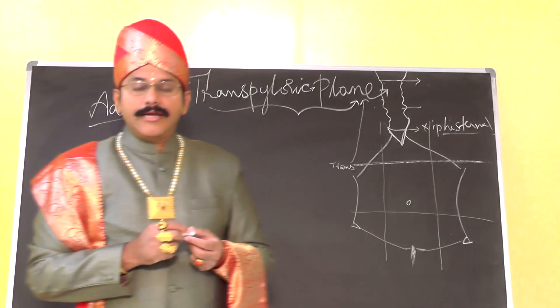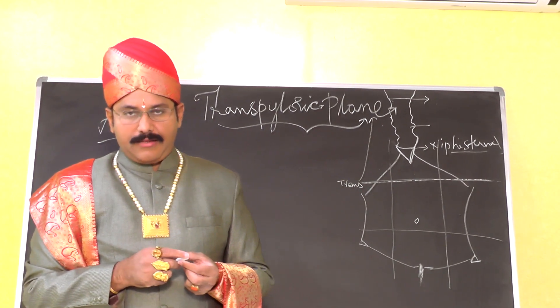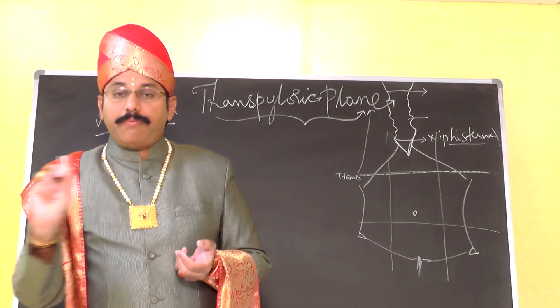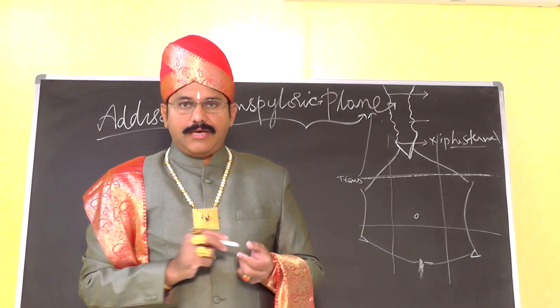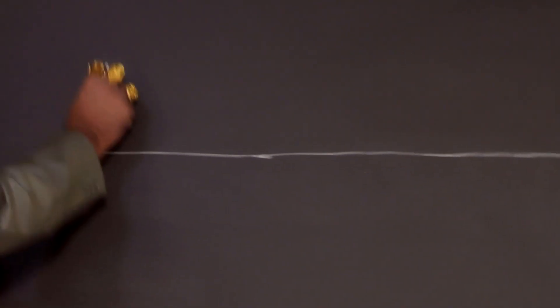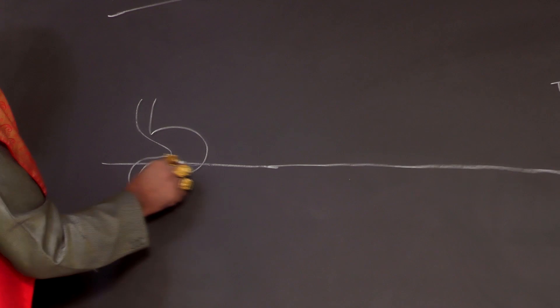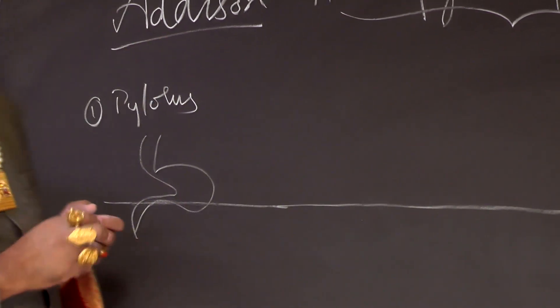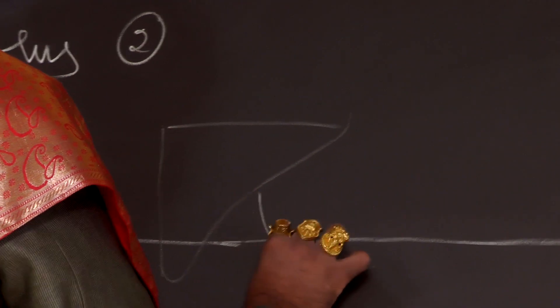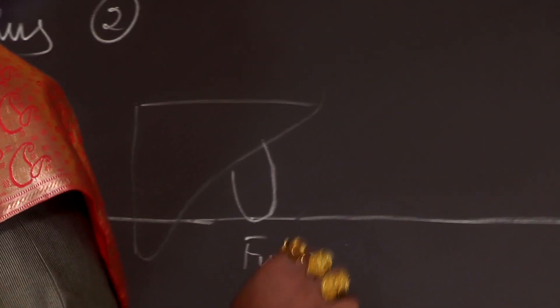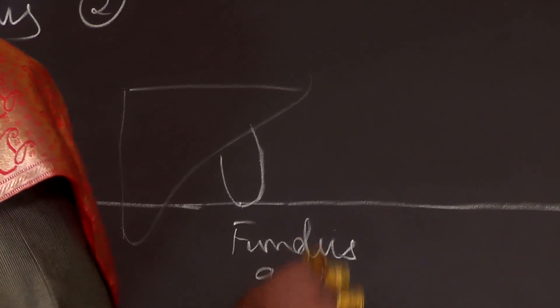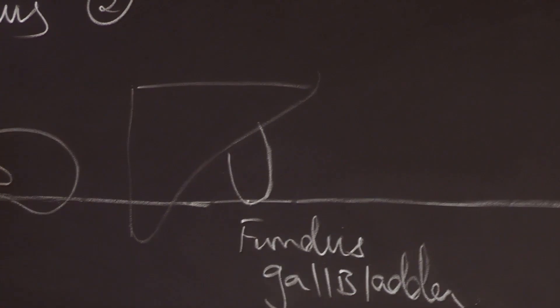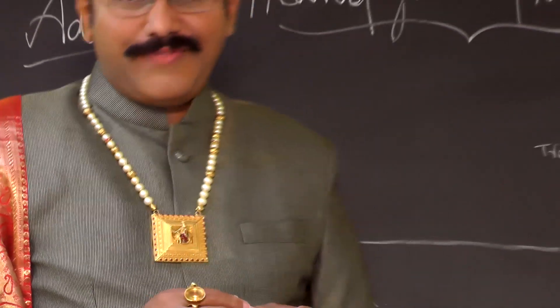The importance of Edison's plane is that this imaginary horizontal line passes through the pylorus of the stomach — hence it is called the transpyloric plane. It also passes through the fundus of the gallbladder.